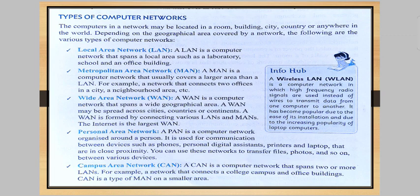Next is types of computer networks — this is very important. First is Local Area Network, or LAN. A LAN is a computer network that maps a local area such as a laboratory, school, or office building. Next is Metropolitan Area Network, or MAN. A MAN is a computer network that usually covers a larger area than a LAN — for example, a network connecting two offices in a city or a neighborhood area.